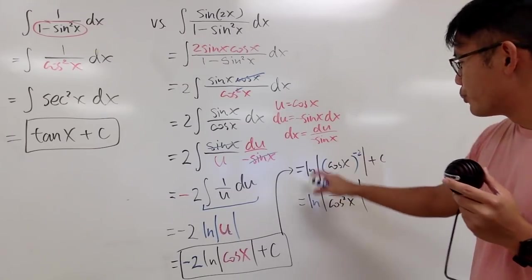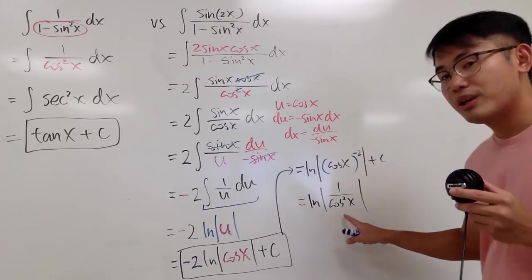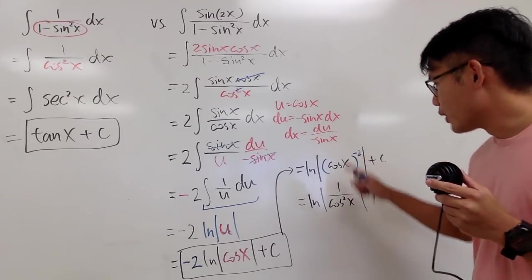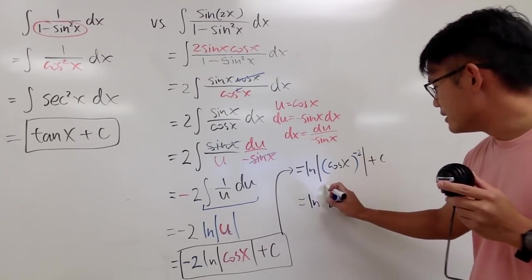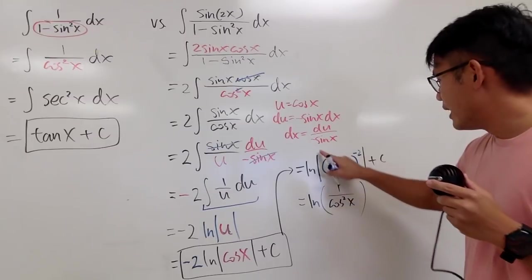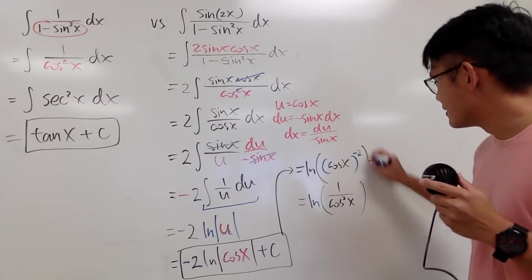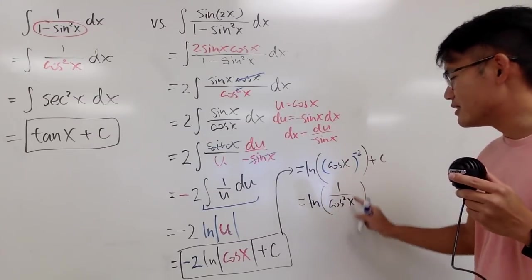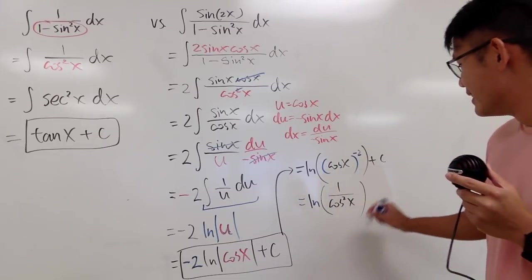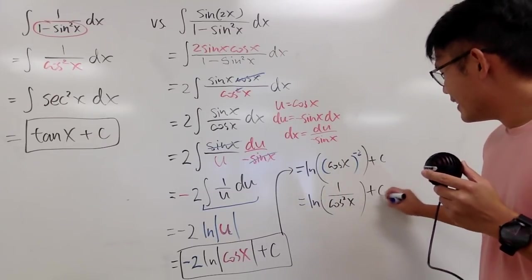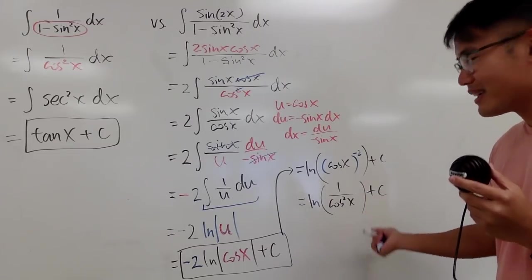In fact, when you bring the negative 2 to the top, you do get a square, so you didn't need the absolute value — you can just use parentheses. Same thing right here — you could have just put down parentheses, because this is always positive now.